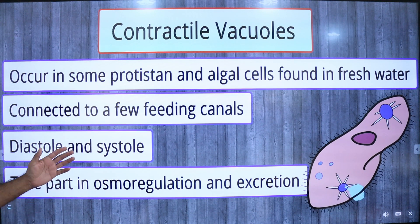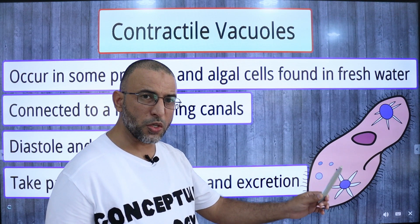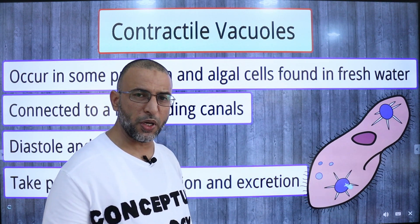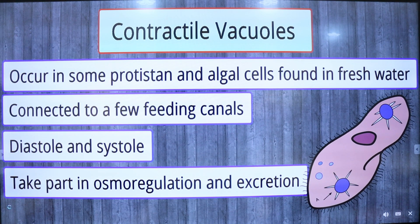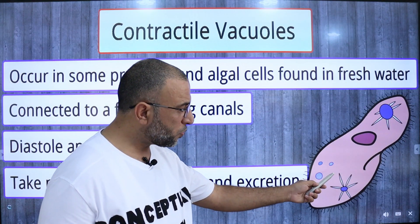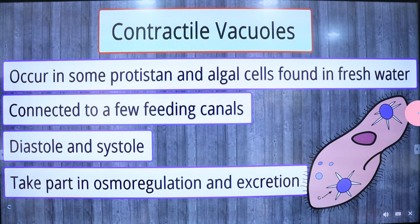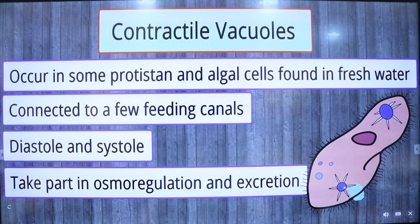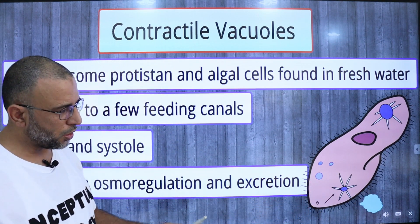Contractile vacuoles are present in some protists and algal cells found in fresh water. Paramecium has two contractile vacuoles, each connected to canals called feeding canals. The contractile vacuole has an extensible and collapsible membrane. Feeding canals obtain water with or without waste products from the surrounding cytoplasm and pour it into the contractile vacuole. The vacuole swells — a process called diastole. When the swollen contractile vacuole contacts the plasma membrane and collapses — called systole — this removes the vacuolar contents to the outside, thus removing surplus water and waste products from the body.